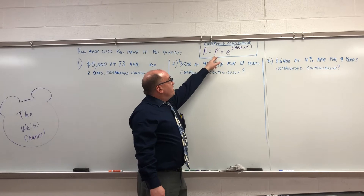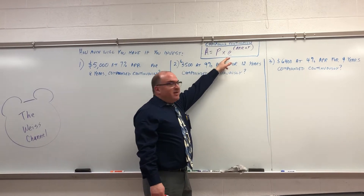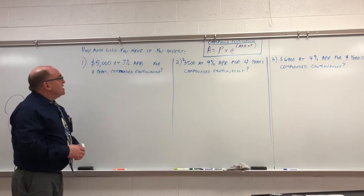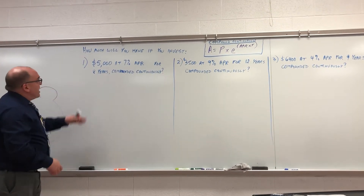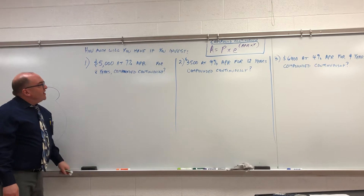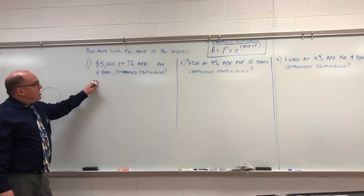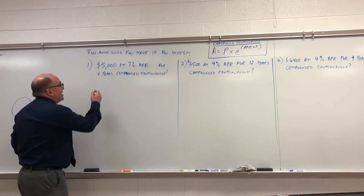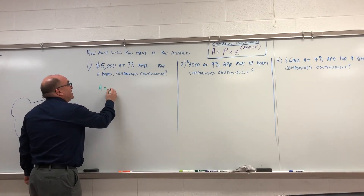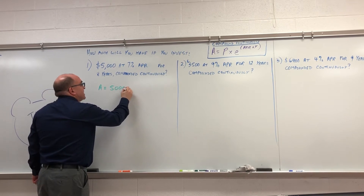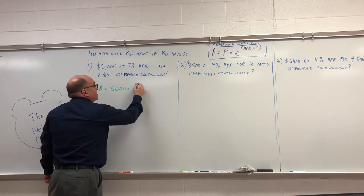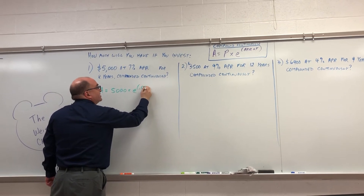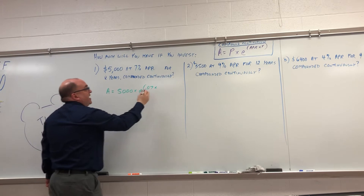Amount equals the principal times E to the annual percentage rate times the number of years. For example, $5,000 invested at 7% APR for 8 years compounded continuously — all you're going to do is A equals 5,000 times E to the 0.07 times 8.